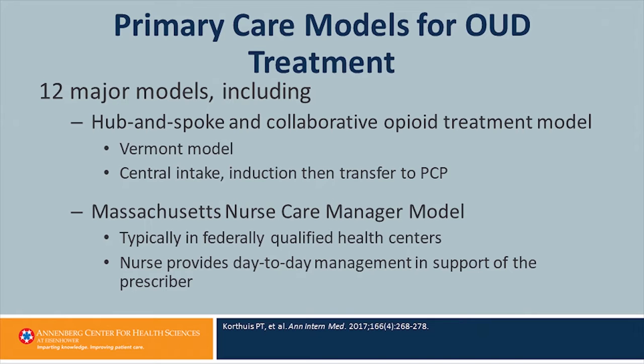I want to speak about two of them. One is the hub-and-spoke model, also called the collaborative opioid treatment model or the Vermont model, in which there is a central intake usually at an opioid treatment program. There's a centralized induction — starting the buprenorphine — along with assessment, and then those folks are transferred to the spoke, which is usually a primary care provider that will provide the ongoing care. This model has been very successful in Vermont, is being replicated in Maine, and there is also a big project in California to replicate it as well, and it's seen a lot of success.